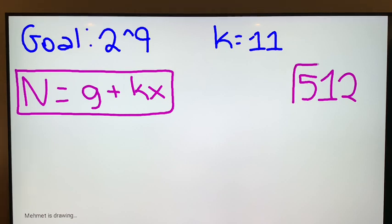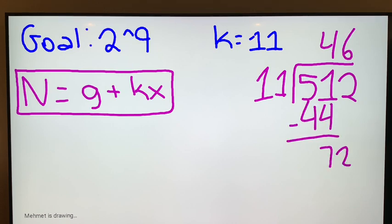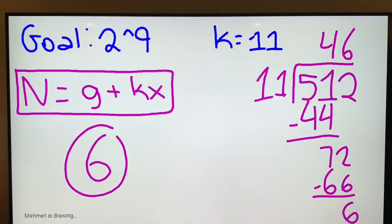We're going to take our goal, 512, and we're going to divide by k, which is 11. So we can get 44, 51 minus 44, 7, 72, 6, and we're left with 6. And 6 is a potential goal that we can use. We can add 11 or subtract 11 and keep going from there to get other values, but we've brought it down somewhere simple. We subtracted 11 46 times.